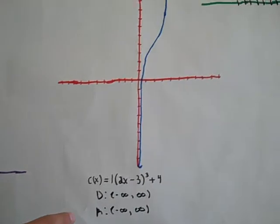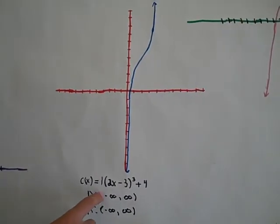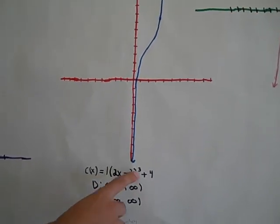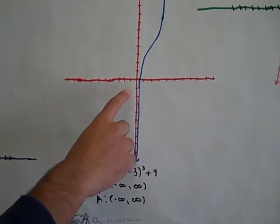And then a transformation for our next graph was c of x equals 1 times 2x minus 3 cubed plus 4. The graph shifts to the right, as you can see.